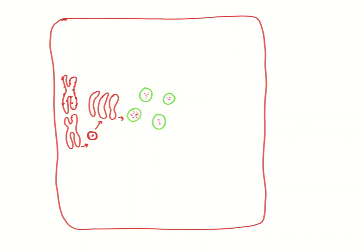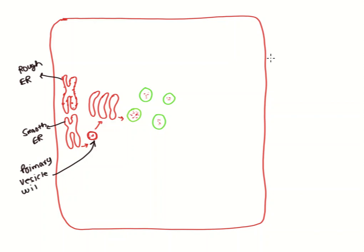After that we are going to see how the lysosomes function inside the cell. But before that, let's give the names one by one because it's very important. This is the rough endoplasmic reticulum. This is the smooth endoplasmic reticulum. And this is the primary vesicle with enzyme. This is obviously the Golgi apparatus. And all these are lysosomes, which contain the digestive acidic enzymes in it.